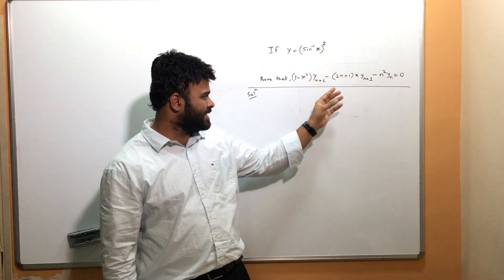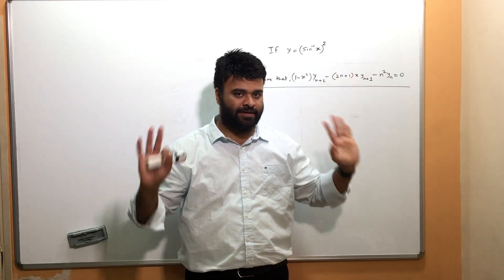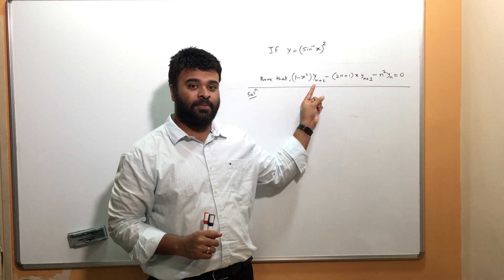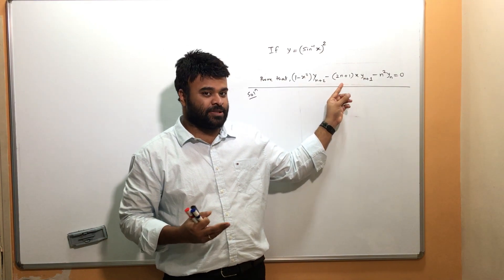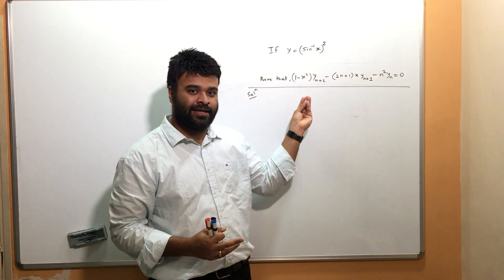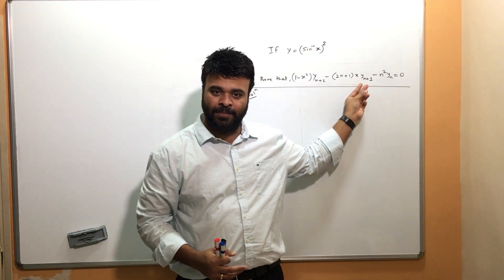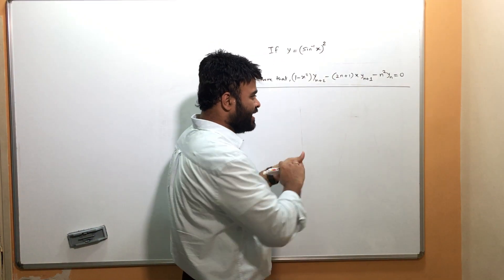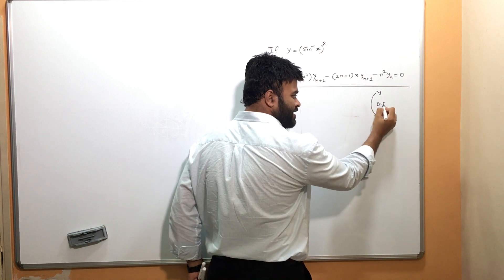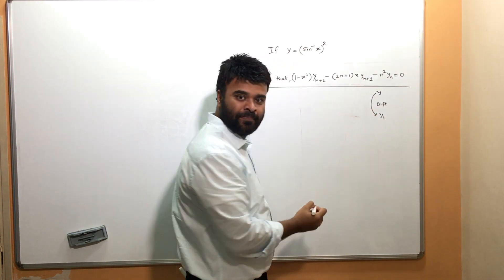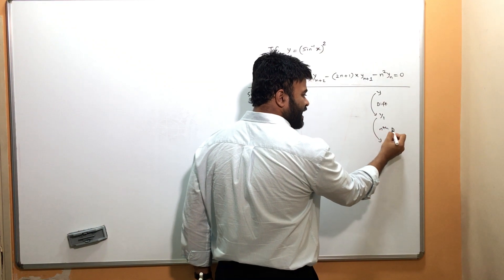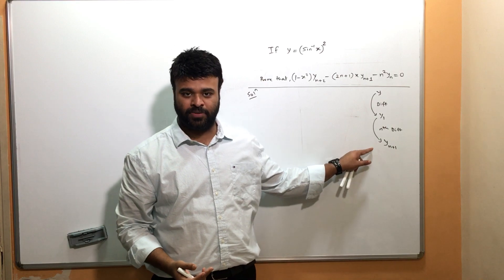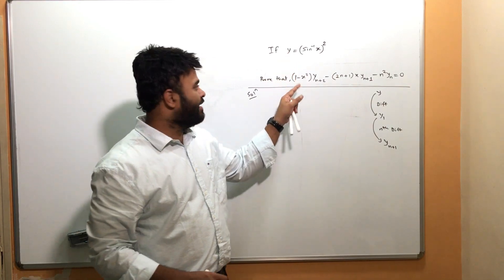I have something given and I want to prove it, so I need to find the nth derivative. When you see the question, observe that it involves y_{n+2} and y_{n+1}. To get y_{n+1}, you do the first derivative and then take the nth derivative. So: differentiate once to get y₁, then take the nth derivative to get y_{n+1}. That's how we approach this.